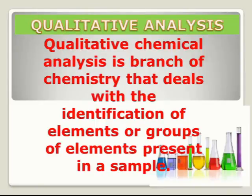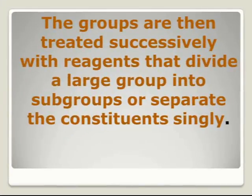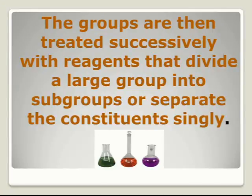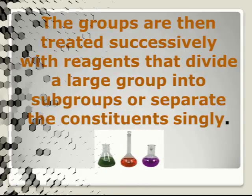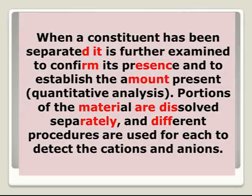Qualitative chemical analysis is a branch of chemistry that deals with the identification of elements or groups of elements present in a sample. The procedure is based on the principle of treating the solution with a succession of reagents so that each reagent separates a group of constituents. The groups are then treated with reagents that divide them into subgroups or separate the constituents singly. When a constituent has been separated, it is further examined to confirm its presence and to establish the amount present. Portions of the materials are dissolved separately and different procedures are used to detect the cations and anions.